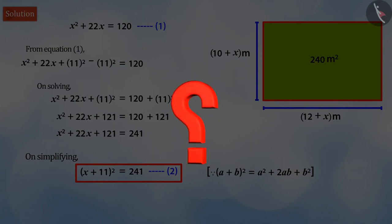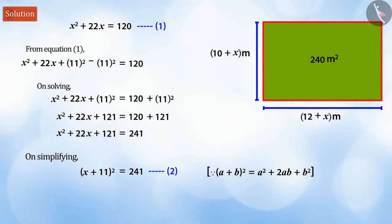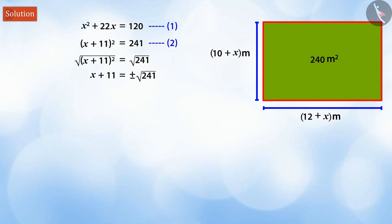Can you find the solution of this equation, that is the value of x? Well done! In order to solve this, the square root sign will be applied to both sides of equation 2. We will get the value of x + 11 as plus or minus √241. On solving equation 1 and 2, we will have the same roots.